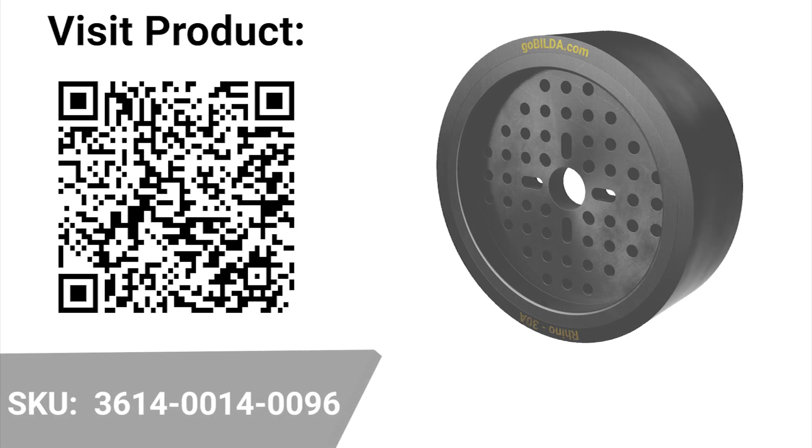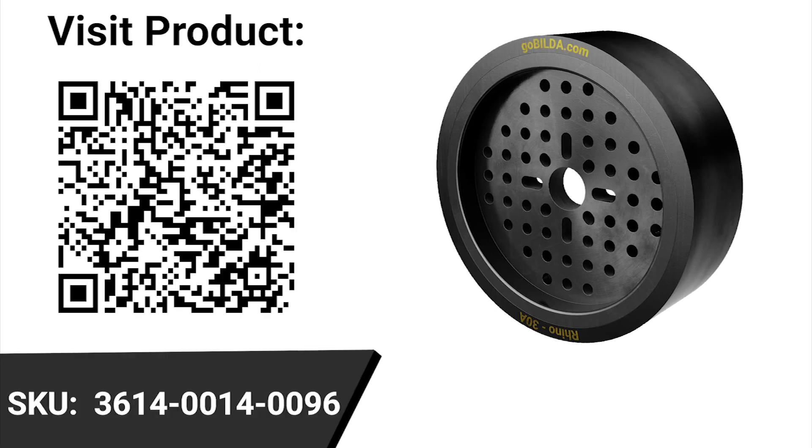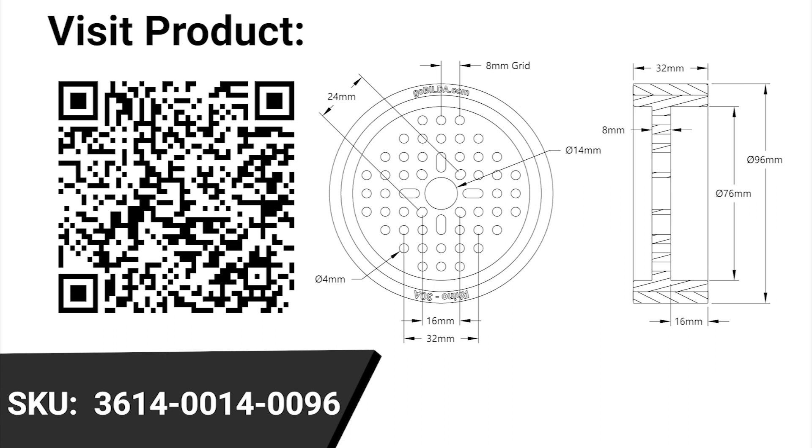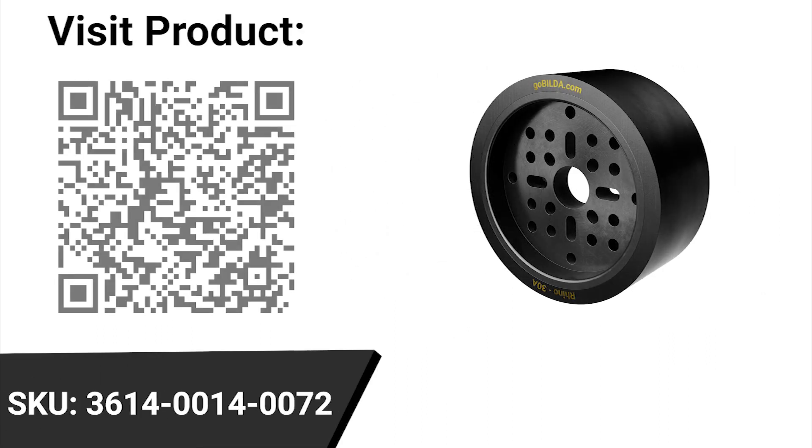Next up is a new version of the Rhino wheels you guys know and love. These are our high grip versions. This means they're clad in a much higher grip 30A durometer rubber as opposed to the 70A durometer of the older wheels.